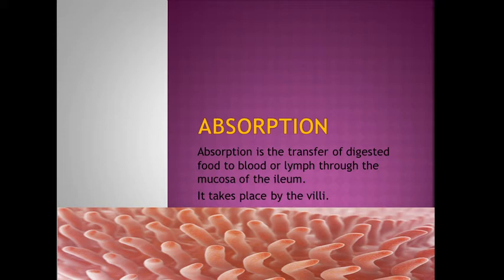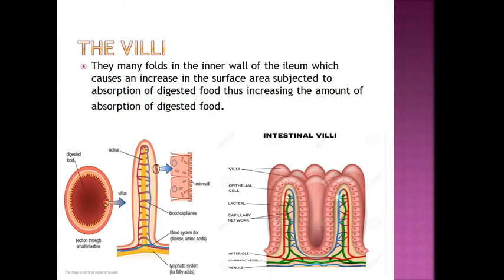Absorption takes place in the small intestine. Can you see this is the lining of the small intestine? The villi — here, this is the small intestine. We take a section from here of the villus. So the villi are many folds in the inner wall of the ileum, which causes an increase in the surface area subjected to absorption of digested food.